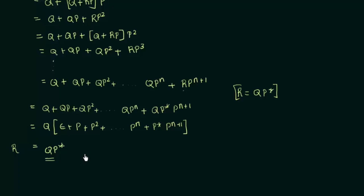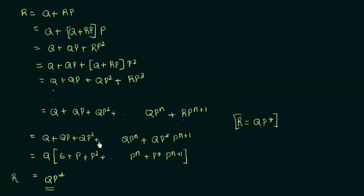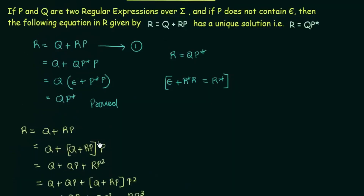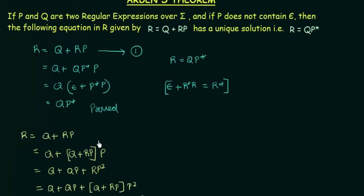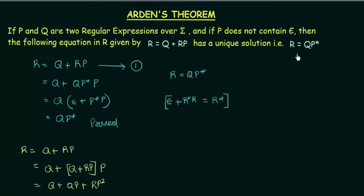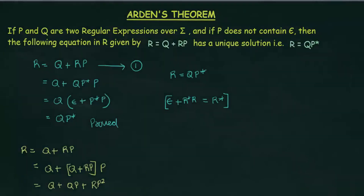Once we have proved Arden's Theorem, we can write r = qp* whenever you get this kind of equation. I hope that was clear to you. Thank you for watching and see you in the next one.